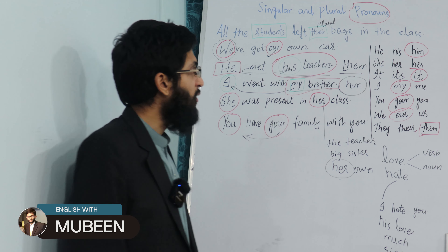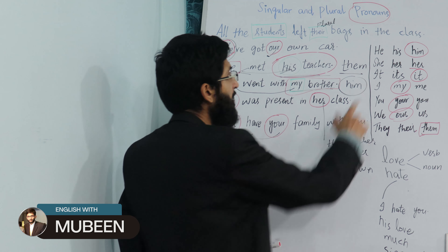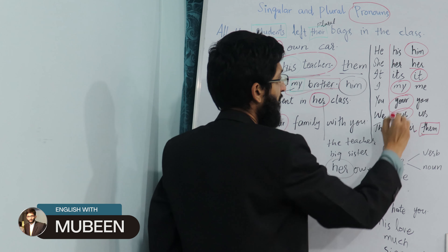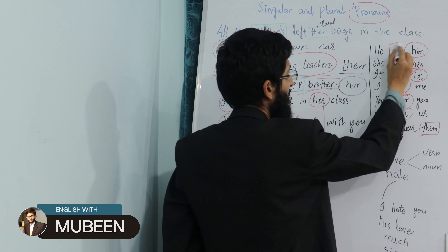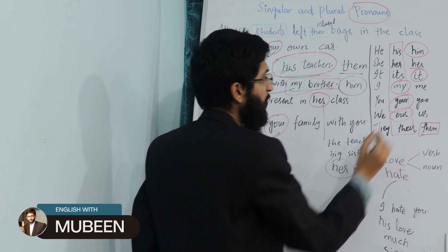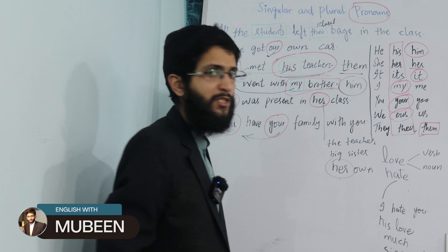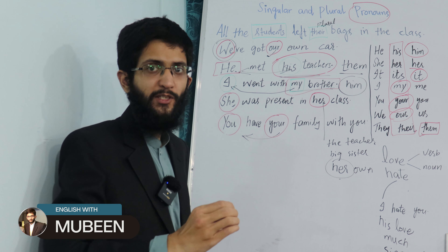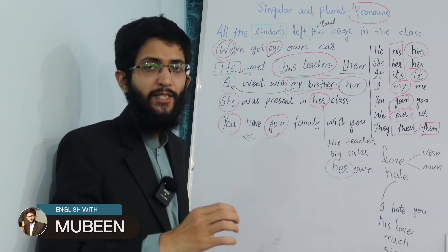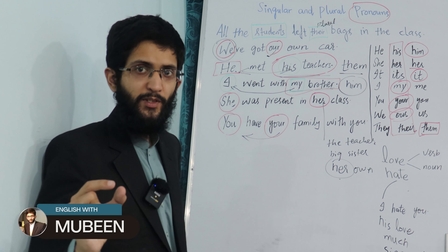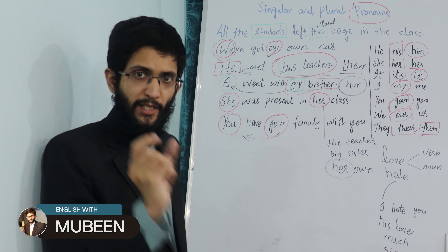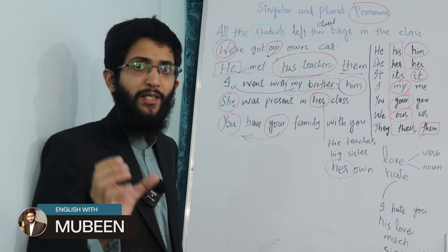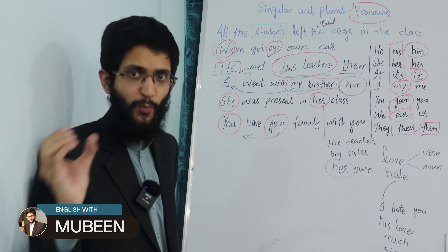Here we will discuss only three columns: he, his, him. The second column contains possessive adjectives. These are also called modifiers because these words modify the nouns. 'His brother' — the word 'his' is modifying the word 'brother.'